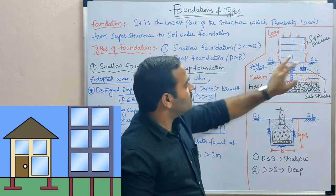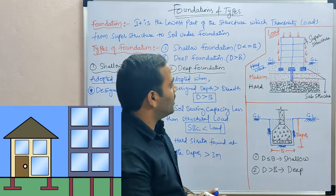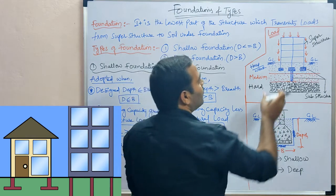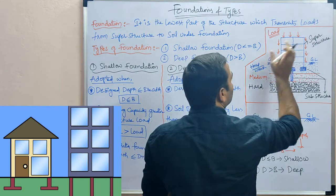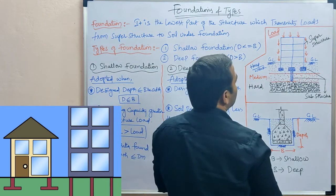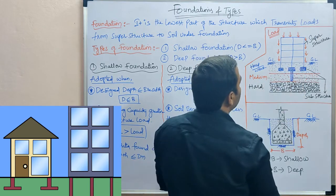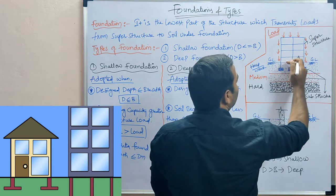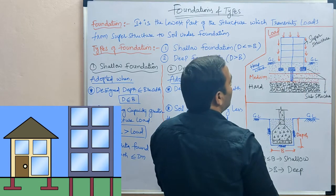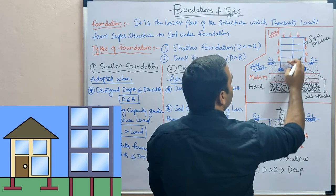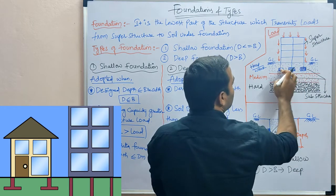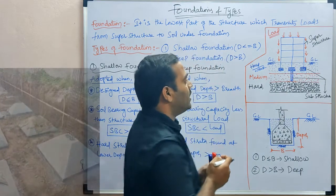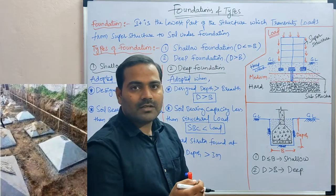In the superstructure, the complete loads coming through the structure will be acting vertically downwards. All these loads need to be transferred to the soil, and this is done by means of foundations. Foundations may be of any type — it may be a shallow foundation or it may be a deep foundation.